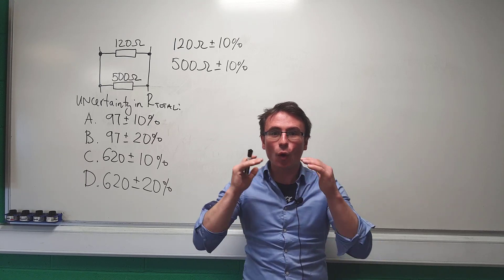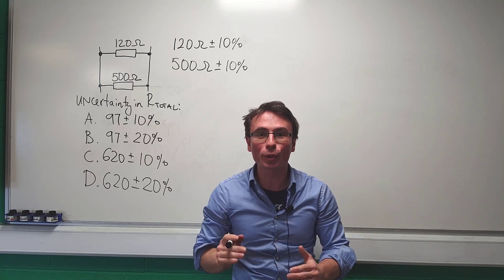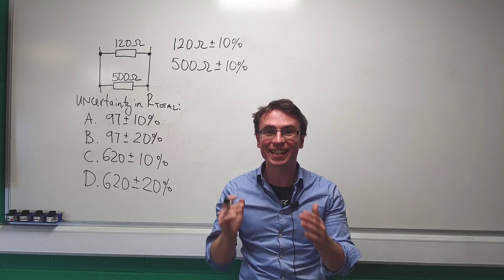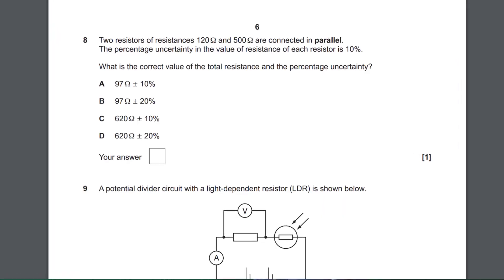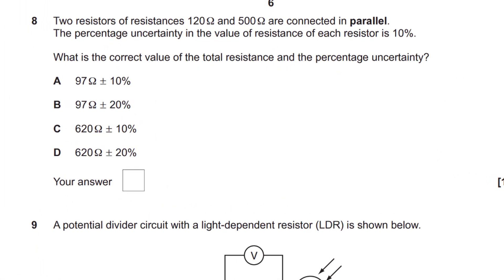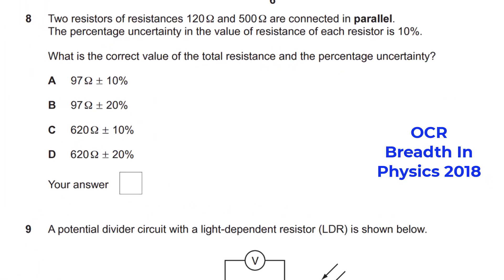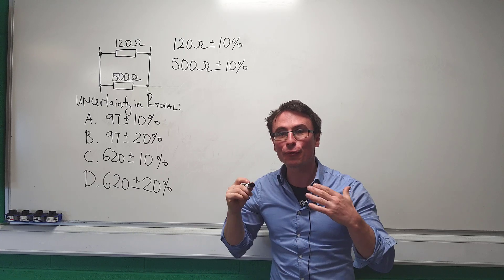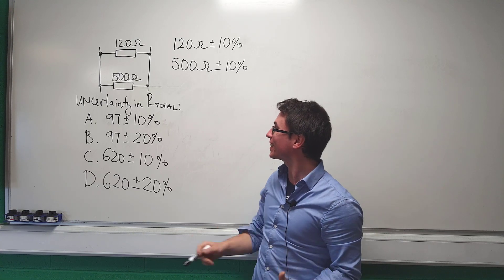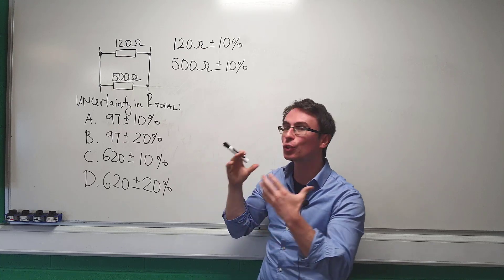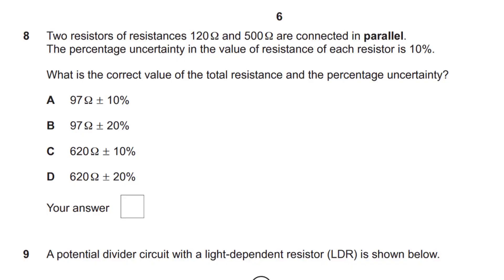Here's a question on uncertainties that only a quarter of candidates actually scored correctly. We have a 120 ohm resistor and a 500 ohm resistor, and the percentage uncertainty in both of them is plus or minus 10%. We need to find the uncertainty in the total resistance, assuming that they're in parallel. Please choose an answer now.